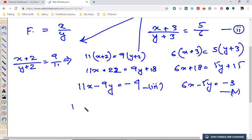Now put this value. From equation 3, we get x equals 9y minus 4 by 11. Put this in the fourth equation.